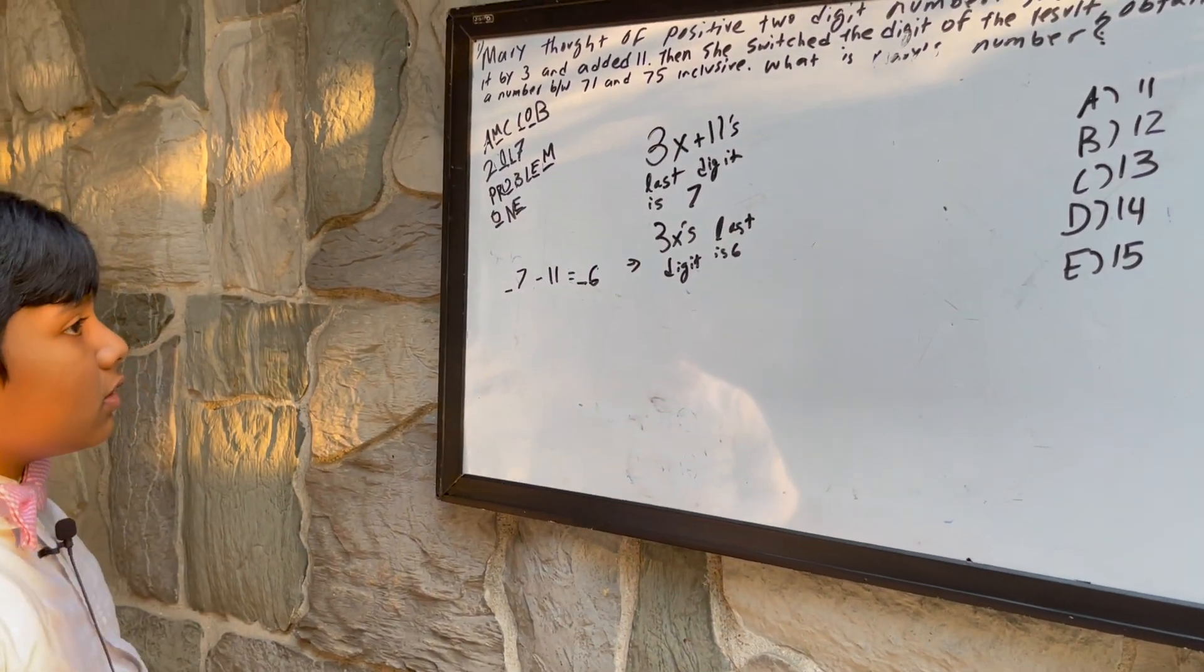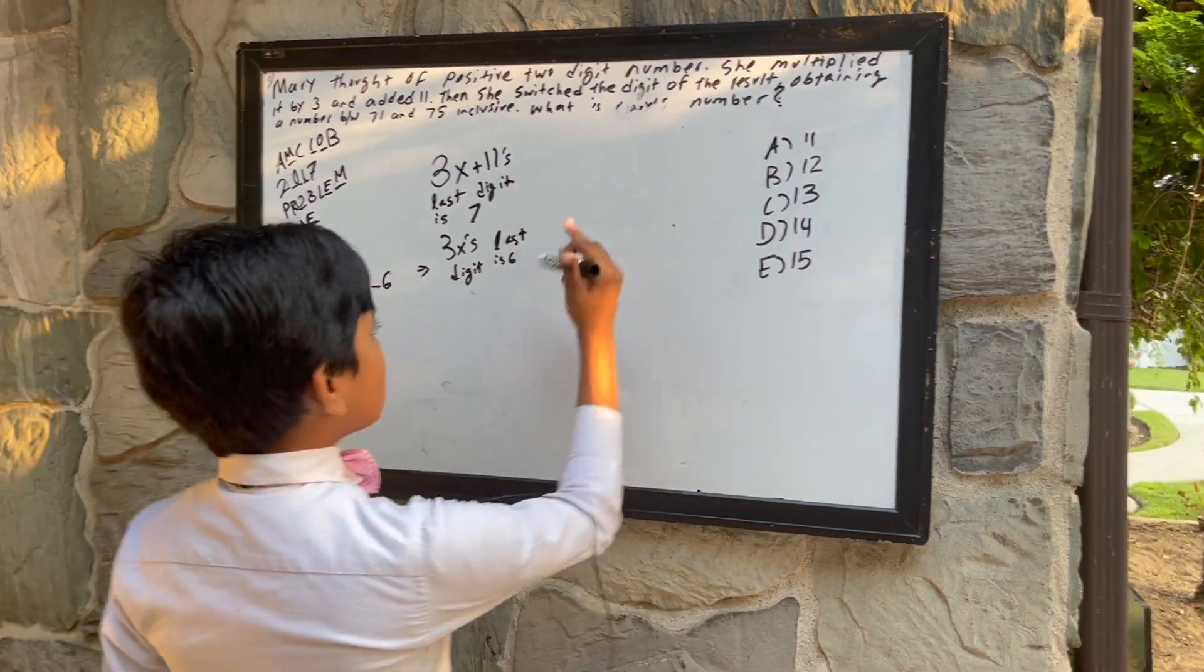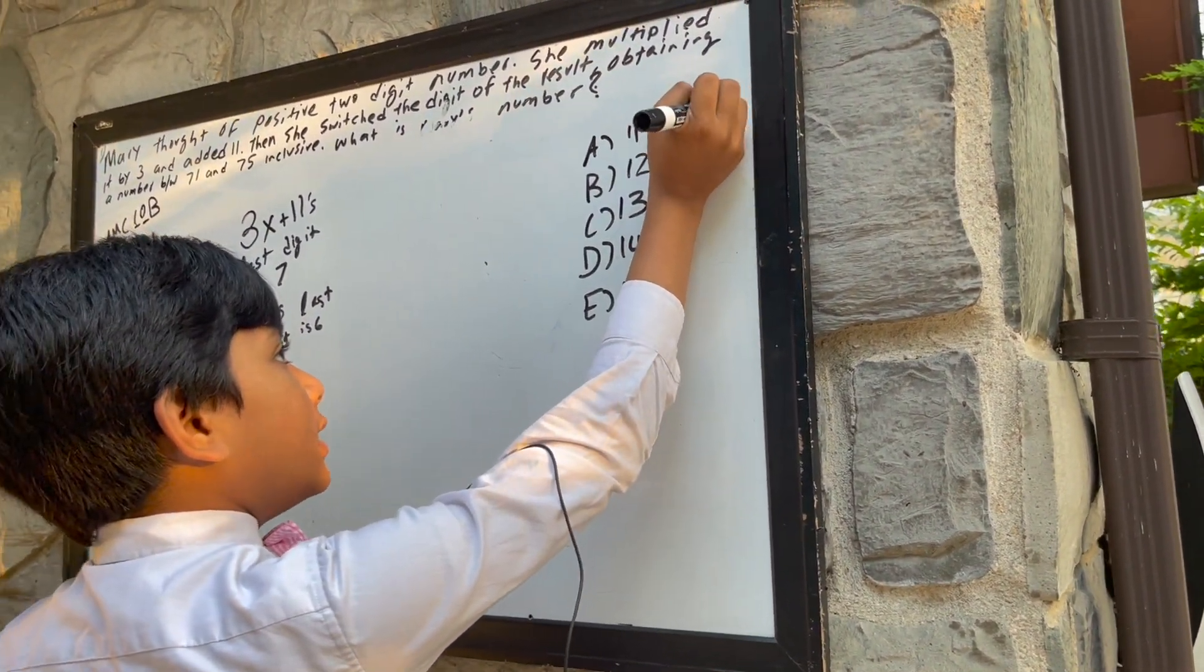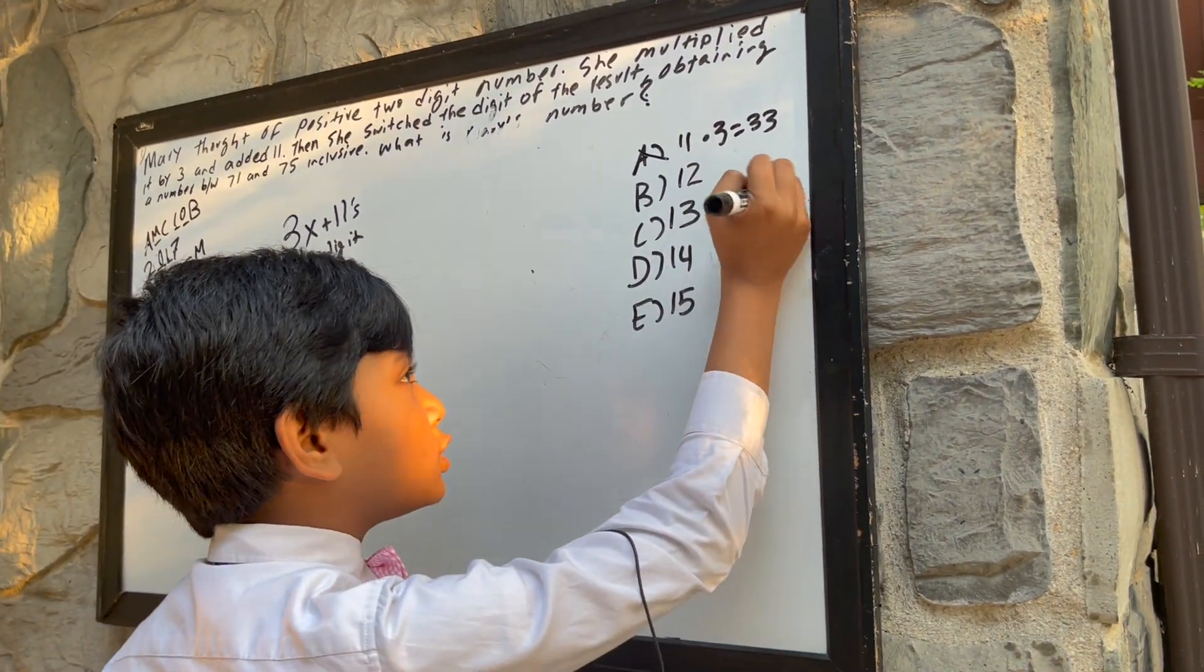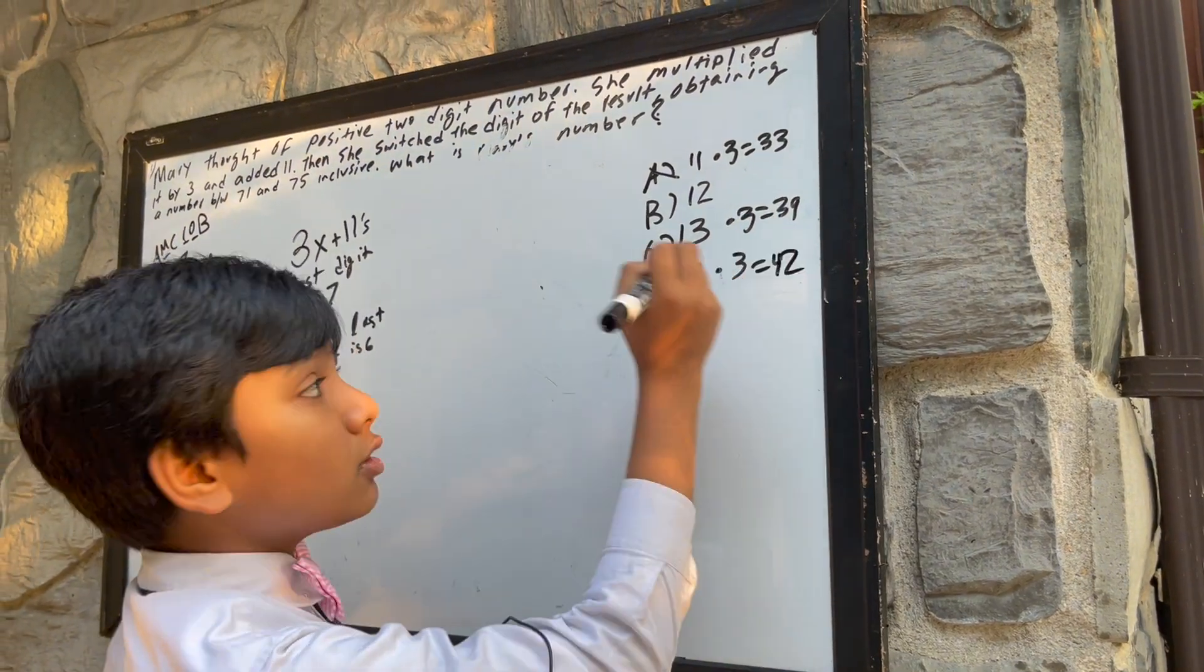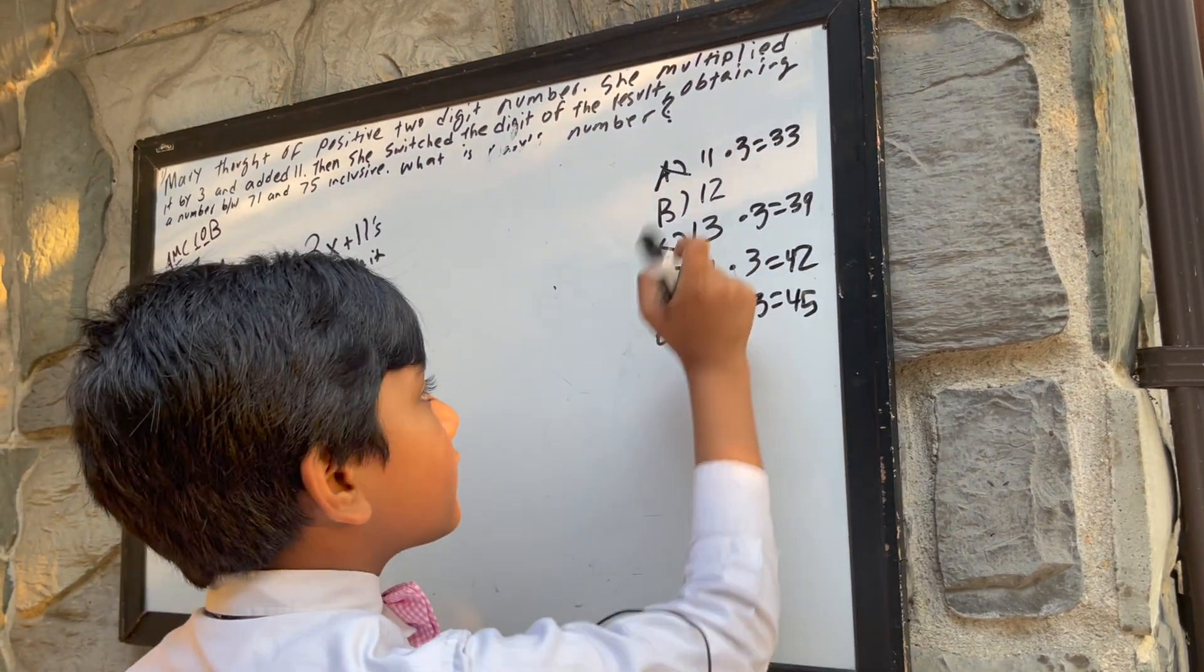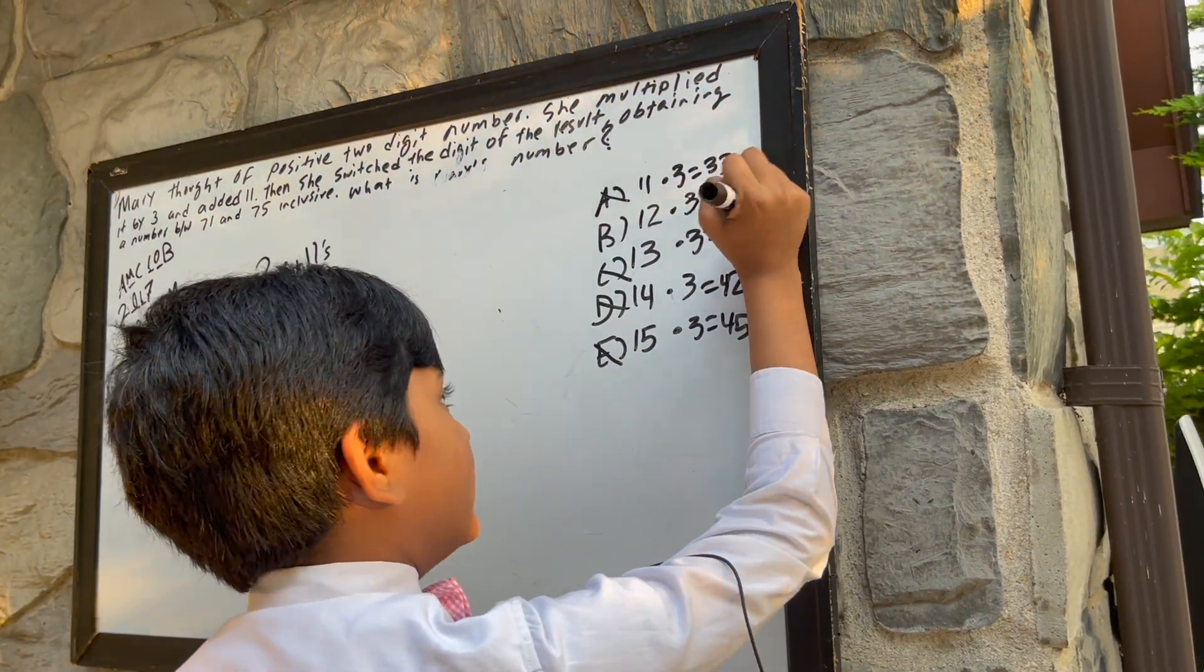So now, which one of these choices applies to this scenario? Well, 11 times 3 is 33, so A is out of the question. 13 times 3 is 39, so C is out of the question. 14 times 3 is 42, so D is out of the question. And E is 15 times 3, which is 45, which is also out of the question. Only B remains. 12 times 3 is 36.